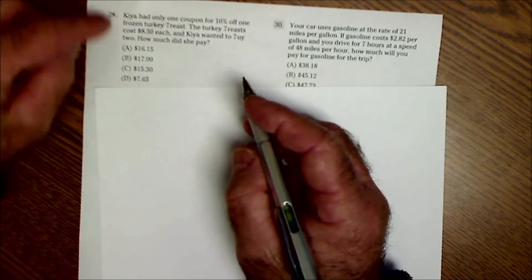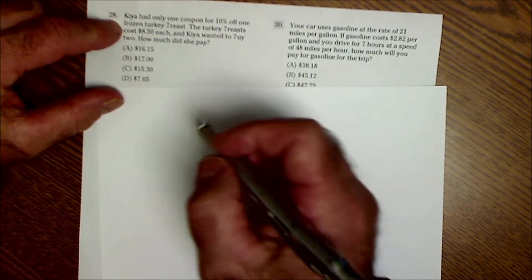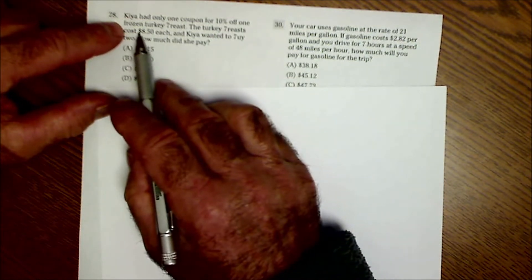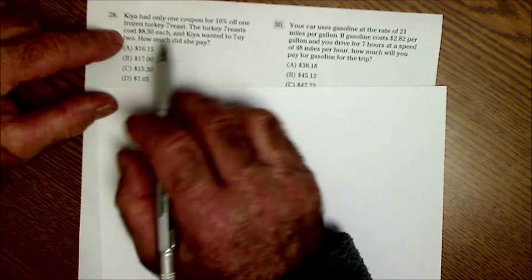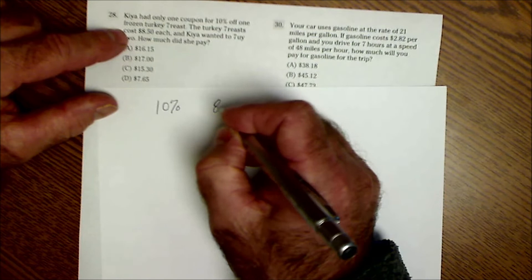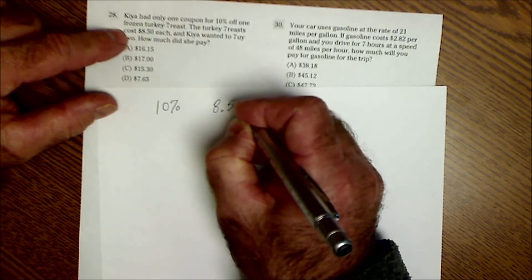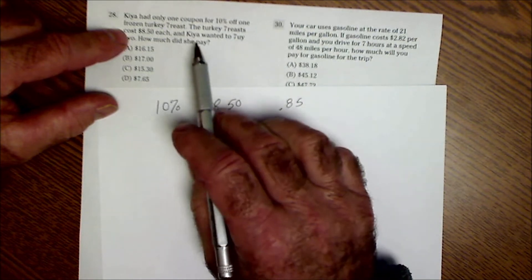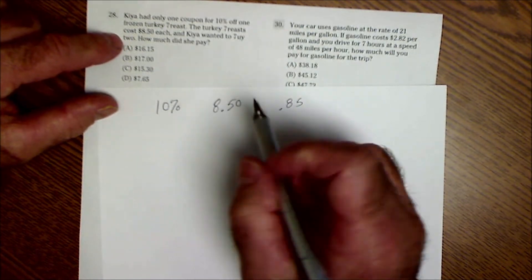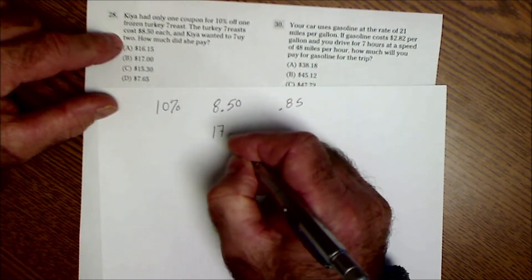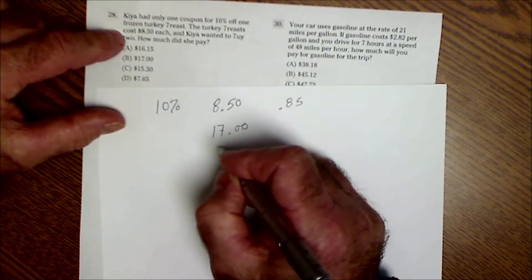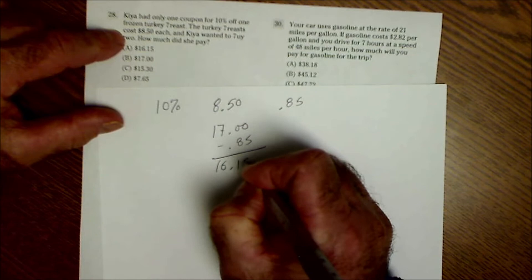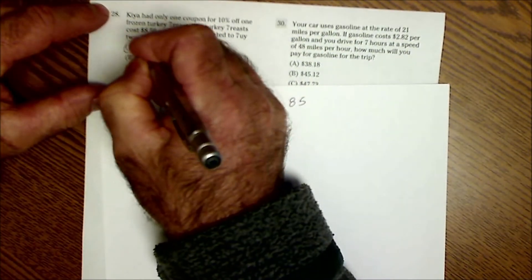Number 28. I have only one coupon for 10% off. This is a typo here. Frozen turkey breast. The turkey breast costs $8.50 each. So if they're $8.50 each, she only has one coupon. So she's going to save $0.85. However, she wanted to buy two. So it's going to be a total of $17. Minus the $0.85 in savings, which is going to give her $16.15. Answer A.